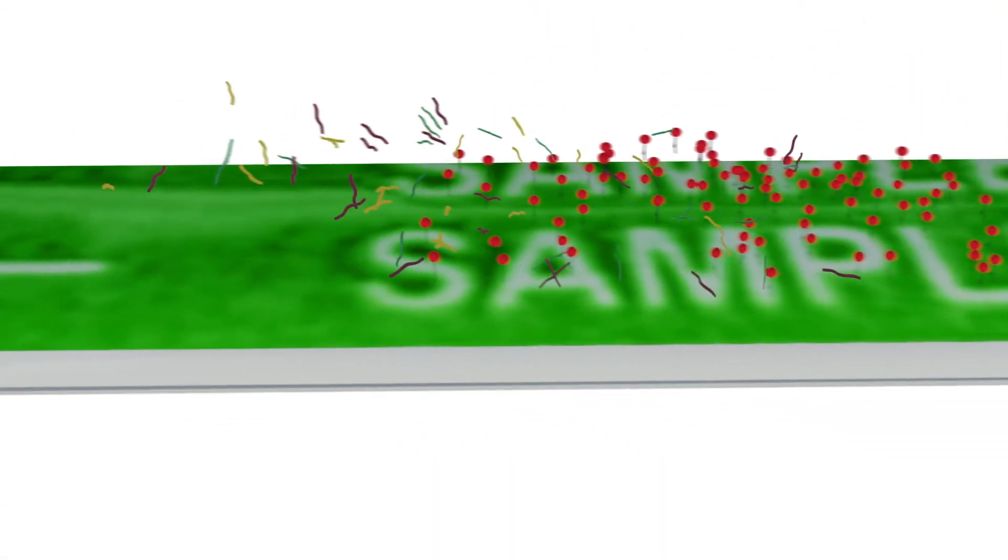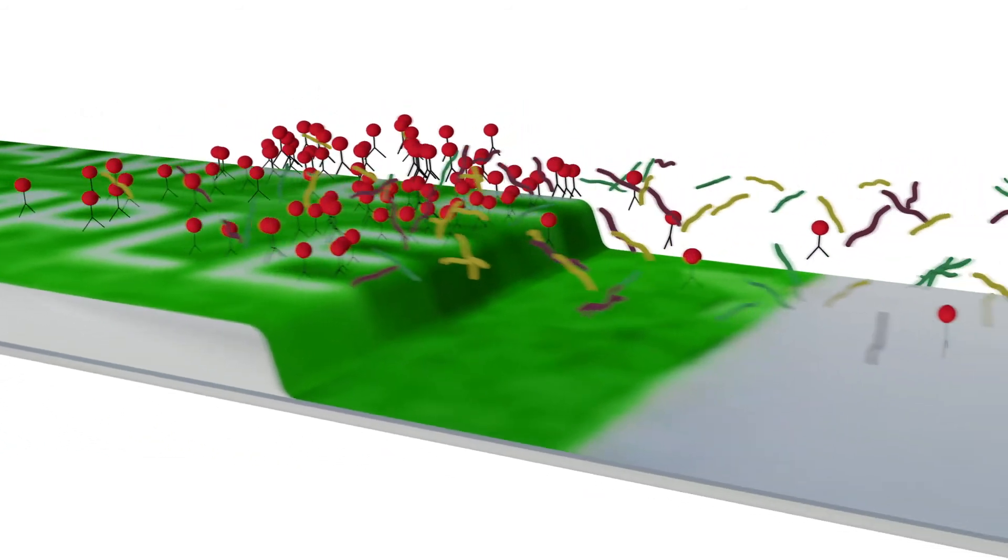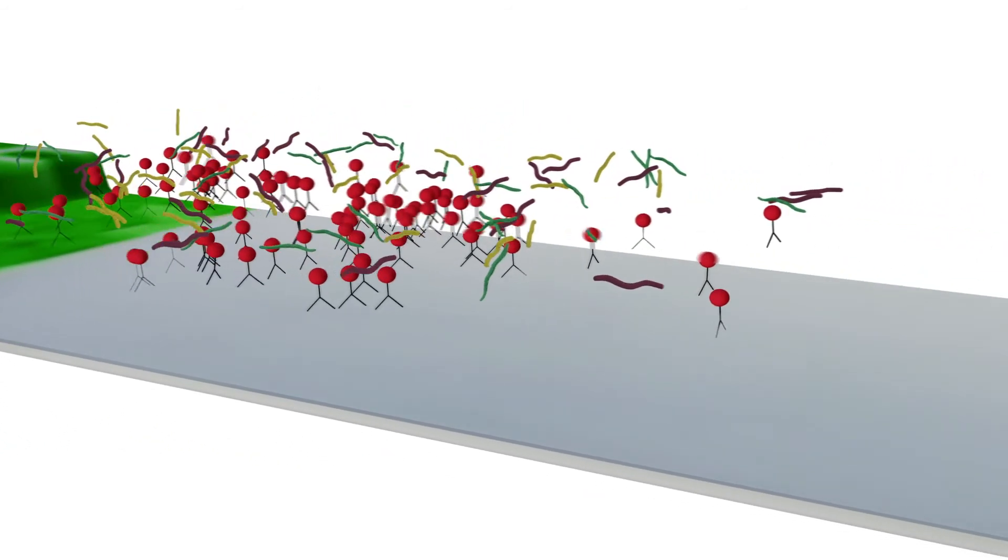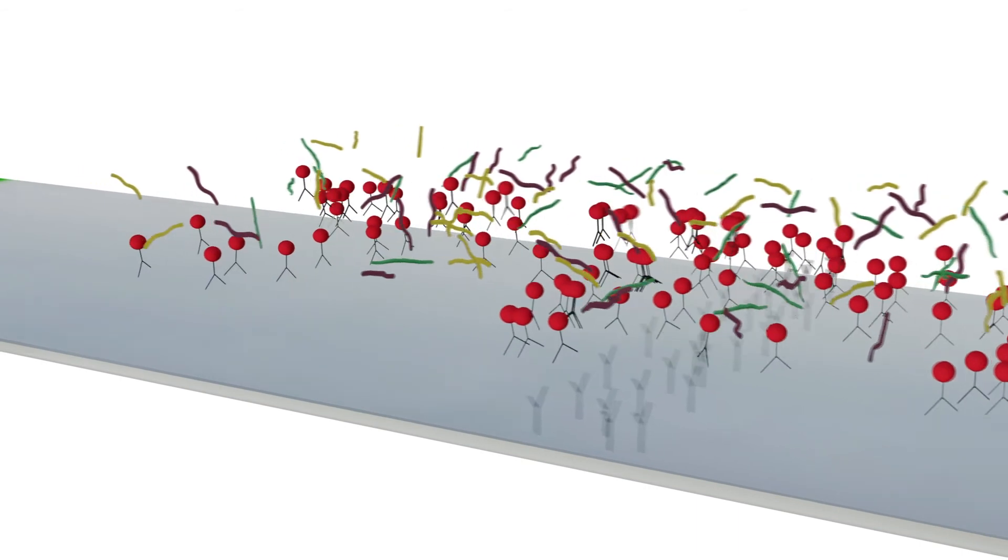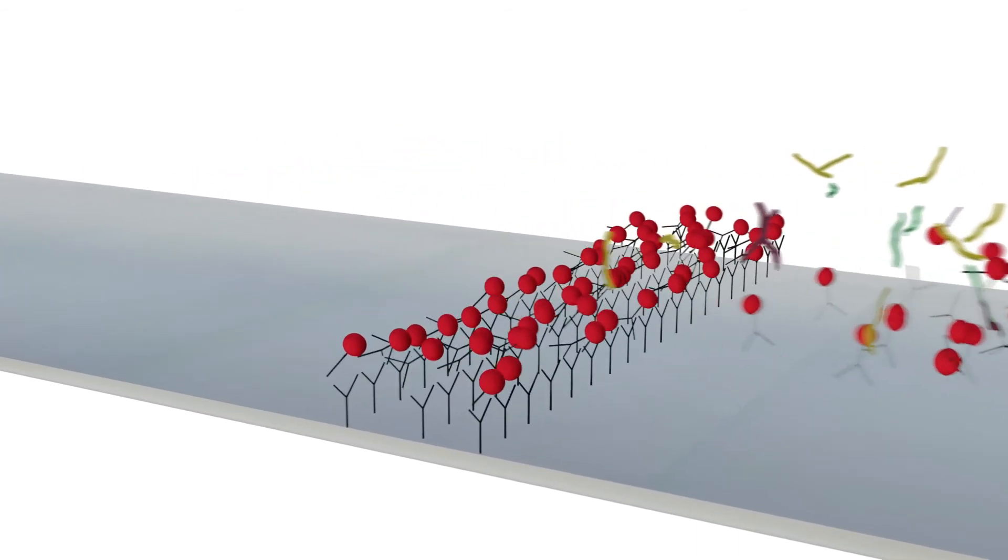Liquid drawn up the device picks up the color labeled antibody striped onto the reagent pad. Since the sample doesn't contain the target pathogen, there's nothing for the color labeled antibody to bind to until it reaches the anti-species antibody striped to the control line.